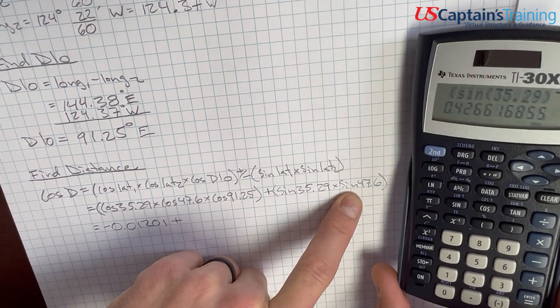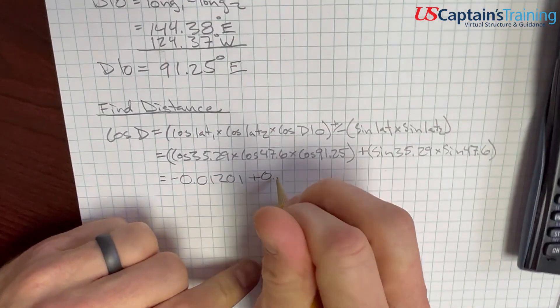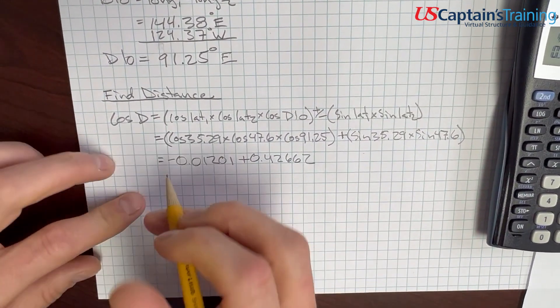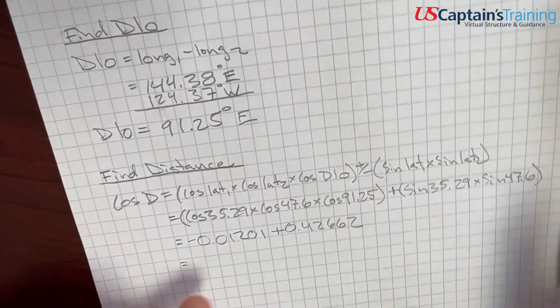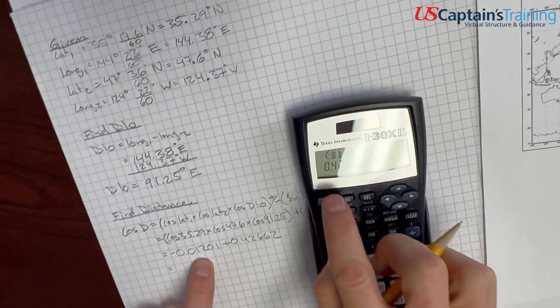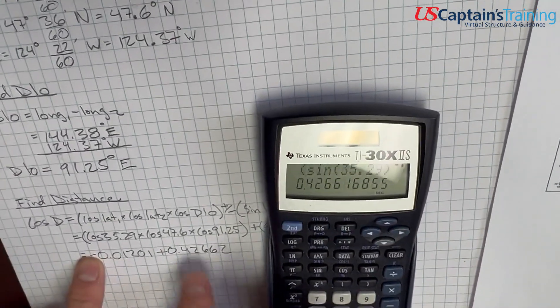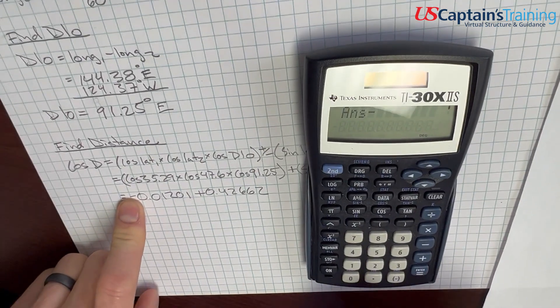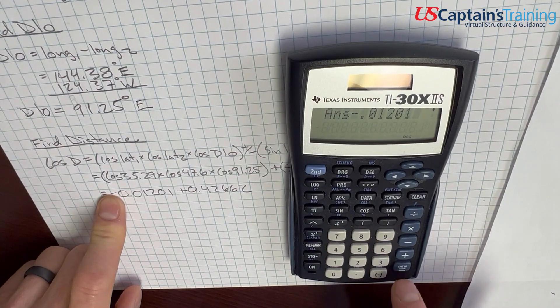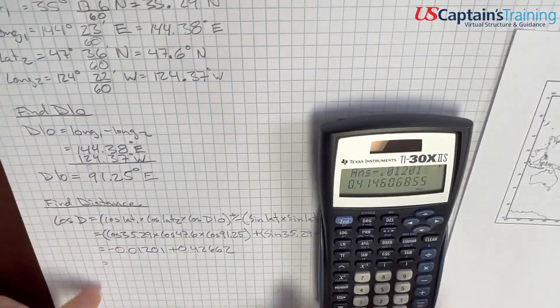And we, now we just do this subtraction, right? And so, this number, this is negative, so we just subtract this number from this number, minus 0.01201 equals 0.41461.